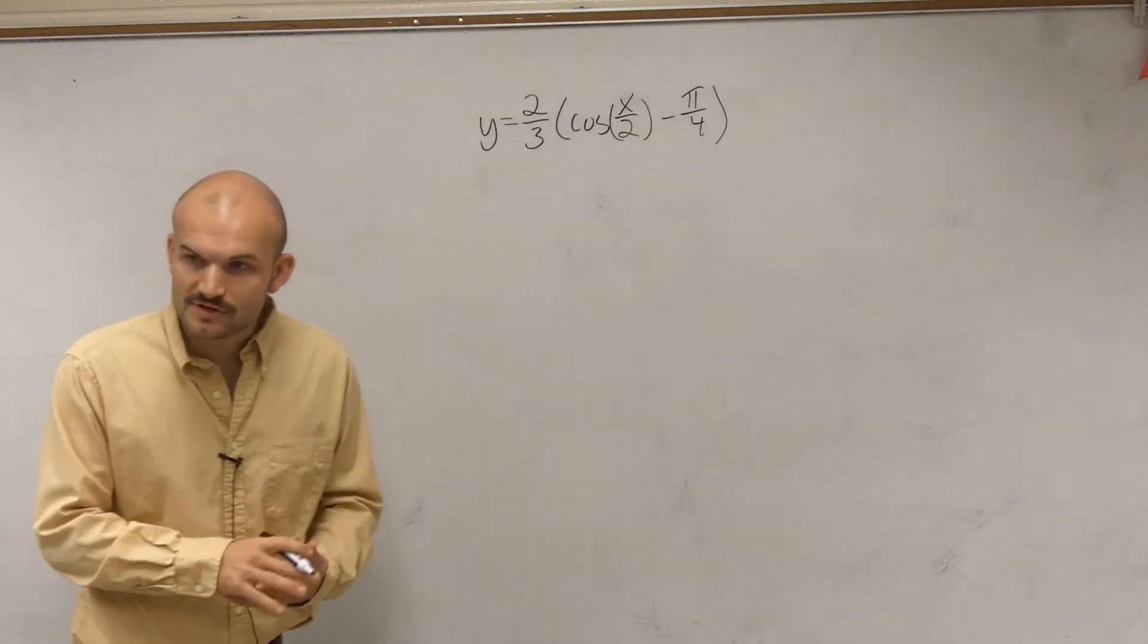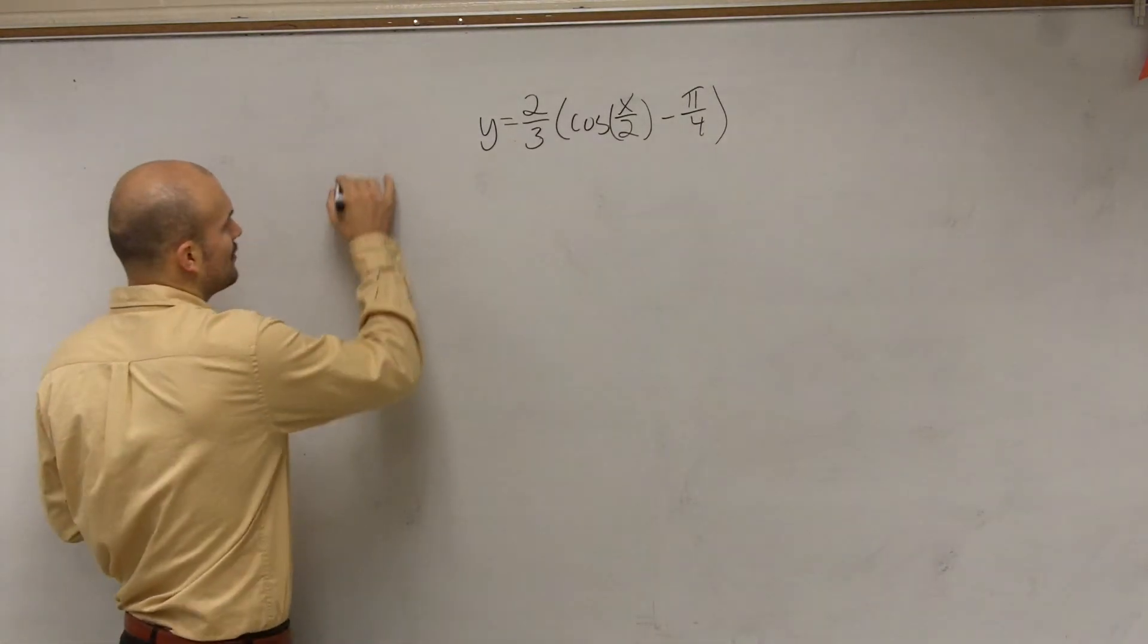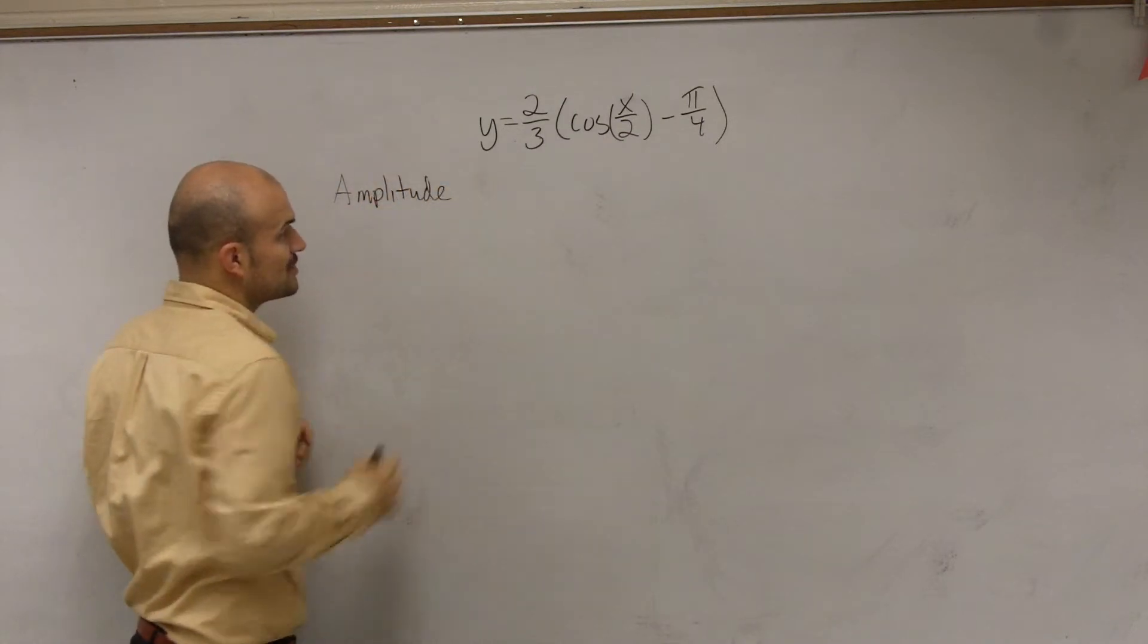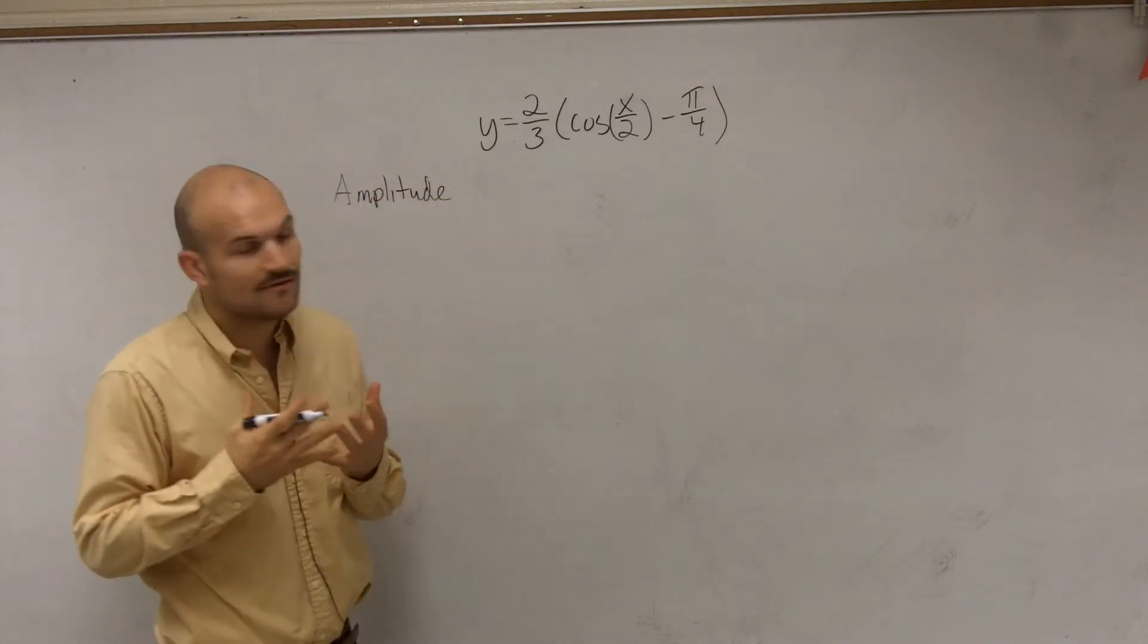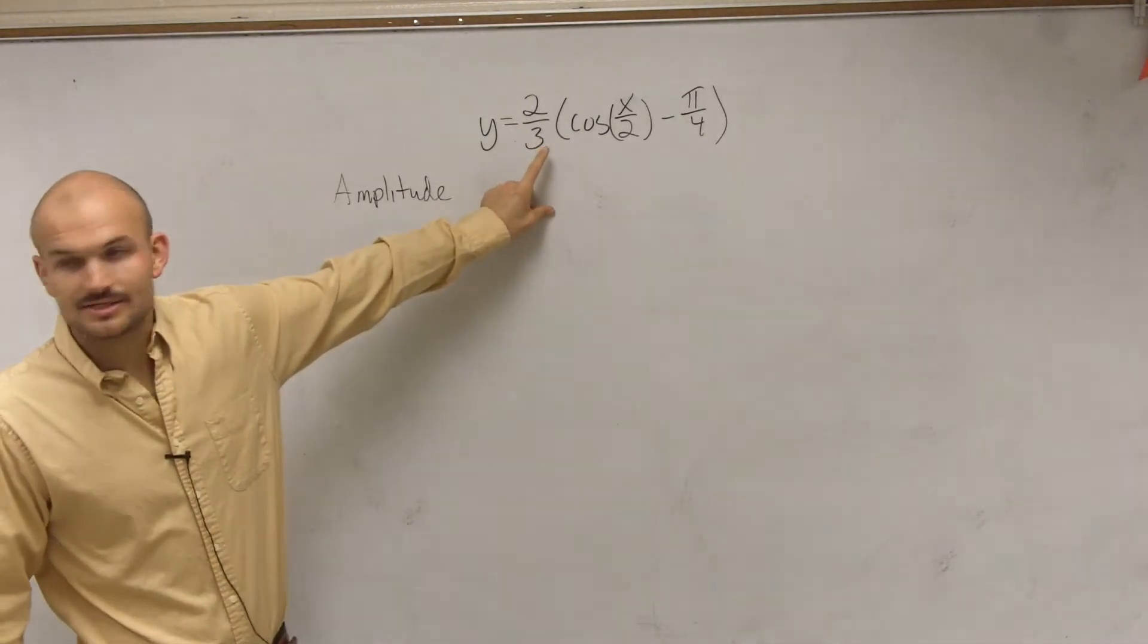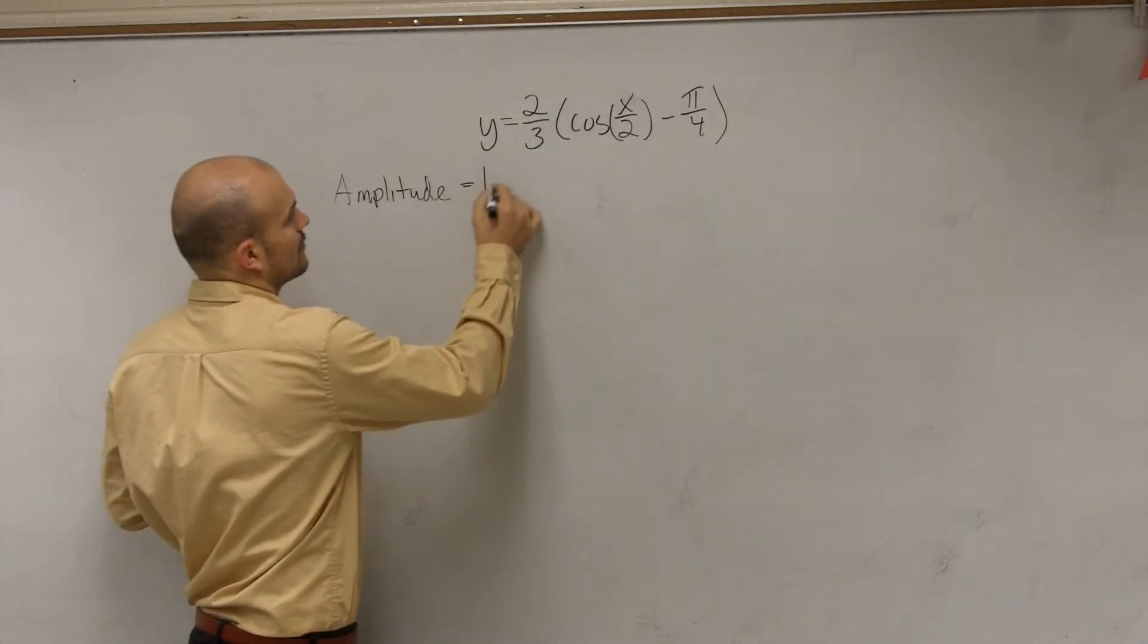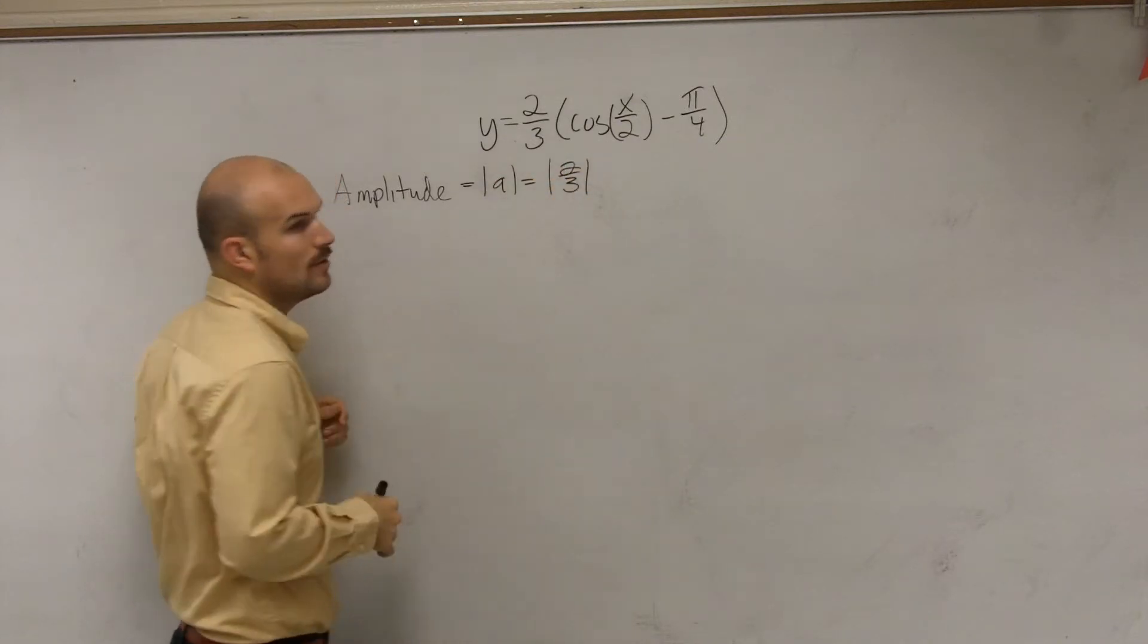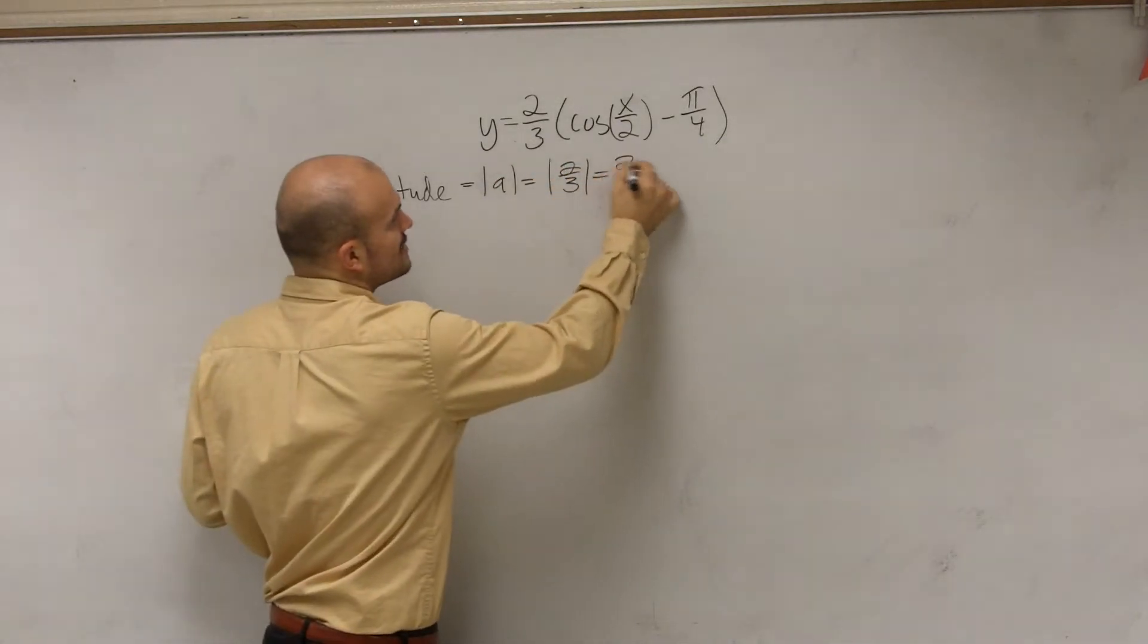So again, the first thing we're gonna do is determine our amplitude. And remember, the amplitude was the absolute value of A. Our A in this case is two-thirds.